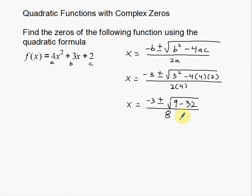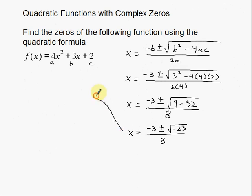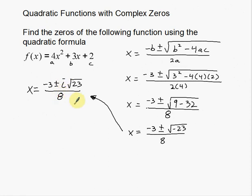Keep simplifying. x equals negative 3 plus or minus the big square root of negative 23, all over 8. In the previous example we were able to reduce some numbers, but in this case we're not able to reduce anything — 23 doesn't reduce further. But the negative inside the square root will factor out. The square root of a negative number gives an imaginary number, so you take the negative part, bring it out, and make it this i variable. So it's going to be negative 3 plus or minus i root 23, all over 8.